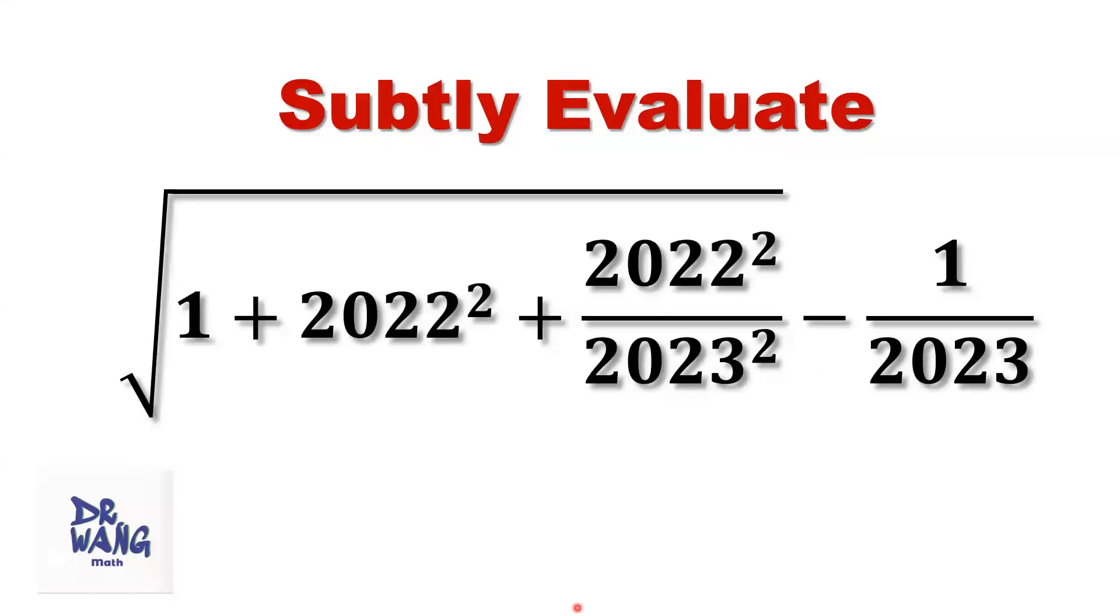Hello, everyone. I'm Dr. Wang. Here is the question. Find the answer for square root of 1 plus 2022 square plus 2022 square over 2023 square minus 1 over 2023.